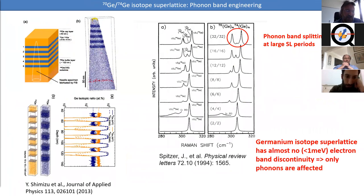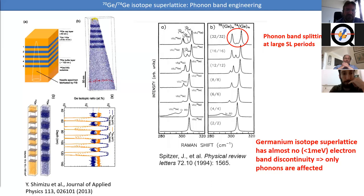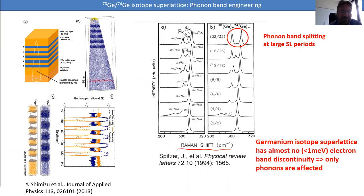Another interesting example of a superlattice is germanium, which doesn't have the same problem as diamond — the electron band discontinuity is actually very small, typically less than a millielectron volt. So most of the effect is really on phonons. Depending on the periodicity of the isotopes in germanium, you get a splitting or two branches of phonons appearing. However, all these materials are 3D. What I want to talk about today is the equivalent in two dimensions.